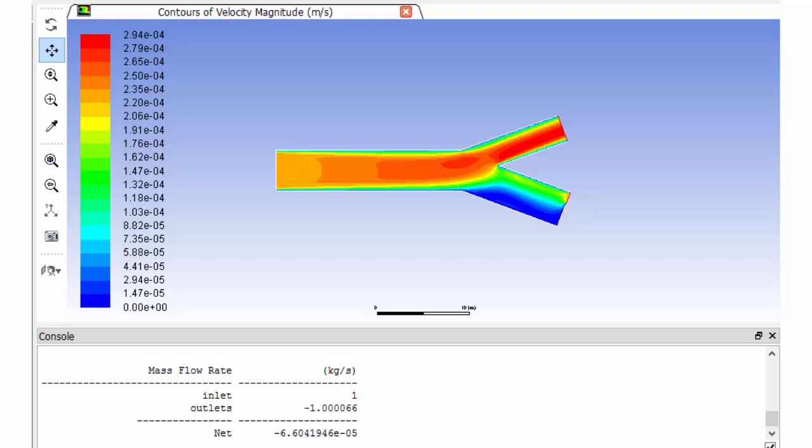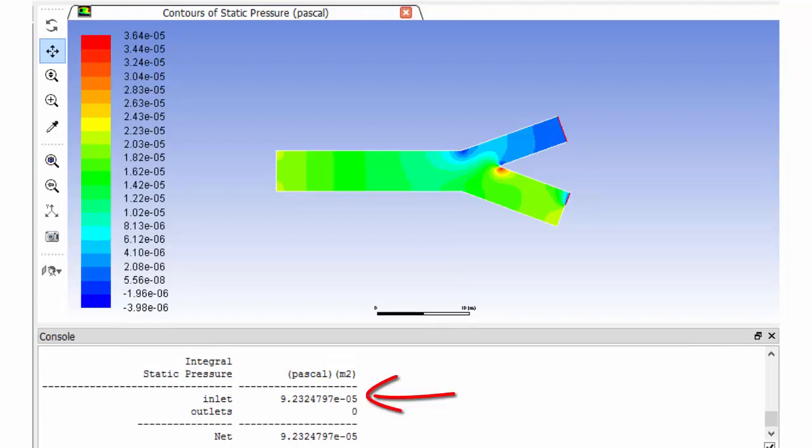Now the mass flow rate remains the same at 1 kg per second, but the pressure at the inlet increased to 9.2 × 10⁻⁵ Pascals because of the back pressure due to the obstruction at the outlet.